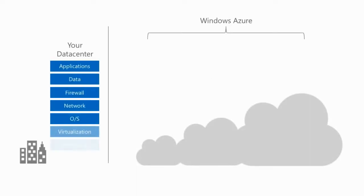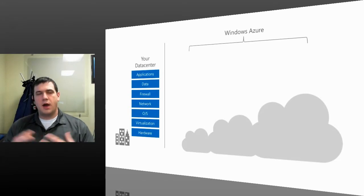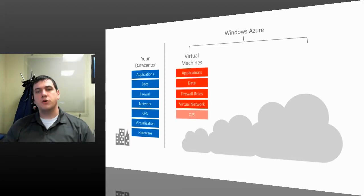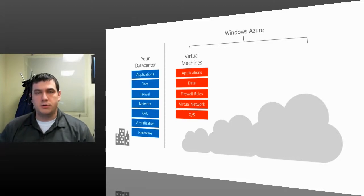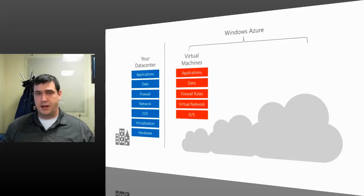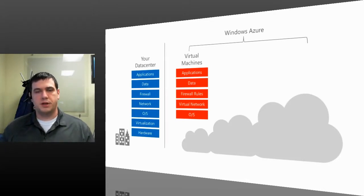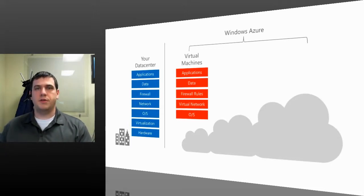I want to give you a look at websites and where they fit into the Azure ecosystem. You have a variety of options when choosing your Windows Azure platform. Virtual machines give you a fair amount of responsibilities — you have to manage firewall rules, virtual network policies, and the operating system version, including upgrades and all actual software on that OS.